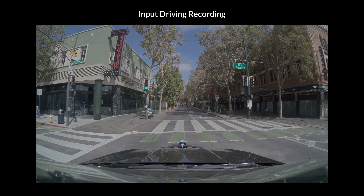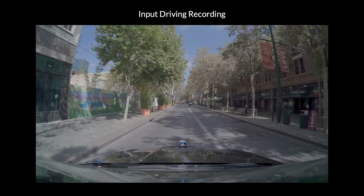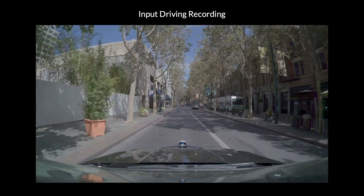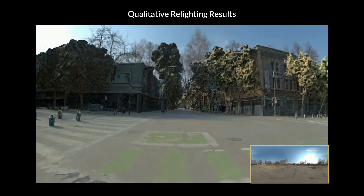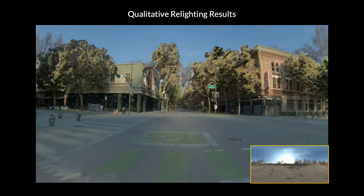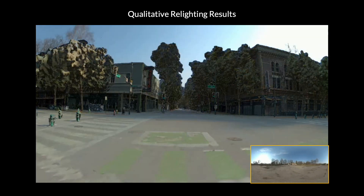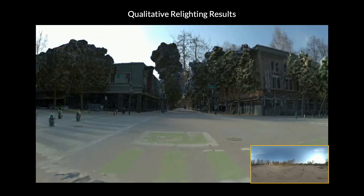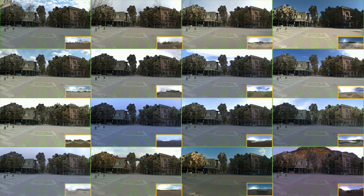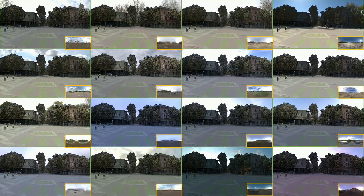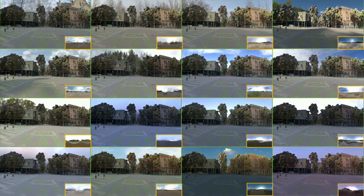Fager can also be used to reconstruct challenging scenes from autonomous driving. The reconstructed sequences can be relighted with diverse lighting conditions, generating an abundance of training and testing data for perception models.